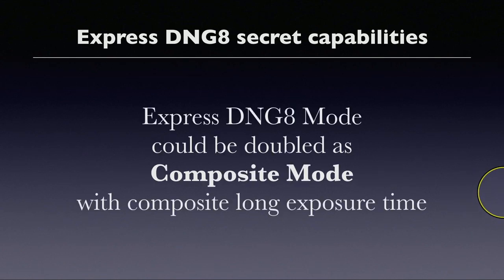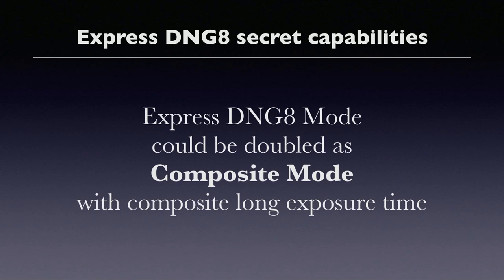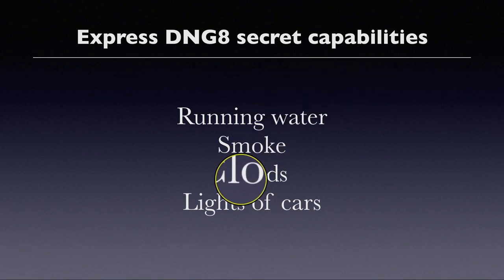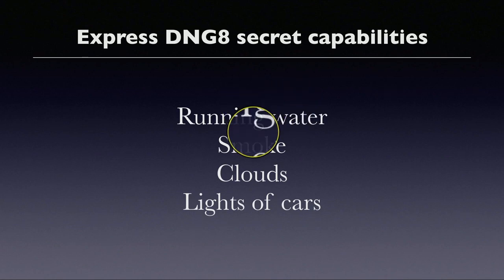Express DNG8 mode can double as a composite mode with composite long exposure time. Not only can you boost imaging quality and reduce noise in stationary situations, but you can also use Express DNG8 to shoot running water, smoke, moving clouds, and car lights to get a simulated long exposure effect — the running water becomes like silk, the clouds like water, and car lights become streaks of light across the street. It's very beautiful — that's the slow shutter speed effect.